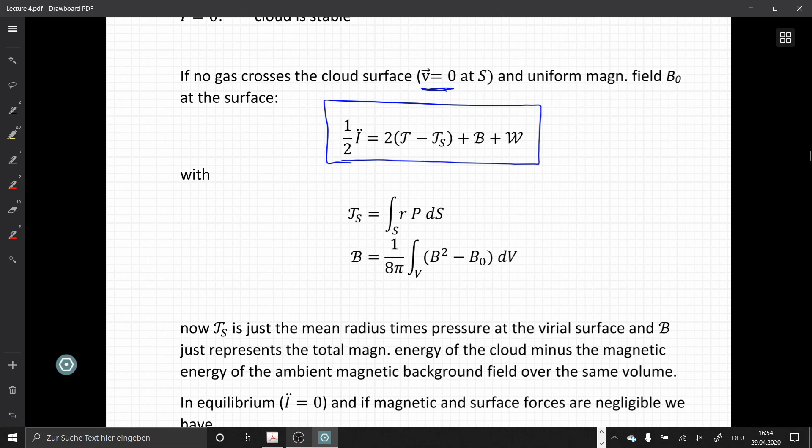So again, TS is just the mean radius times the pressure at the surface, the virial surface, and B represents the total magnetic energy of the cloud minus the magnetic energy of the ambient background field.